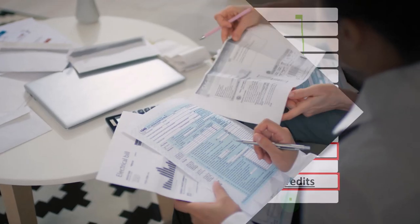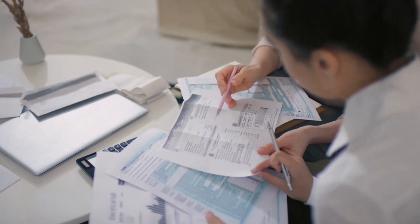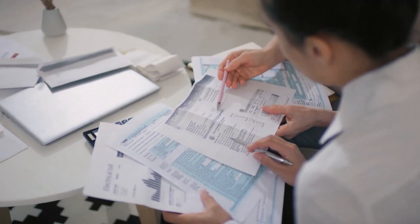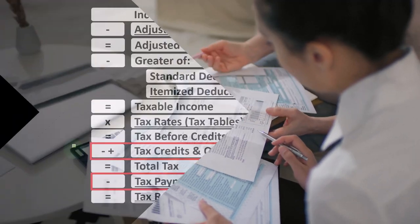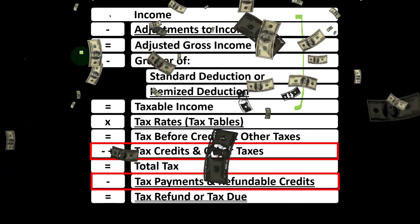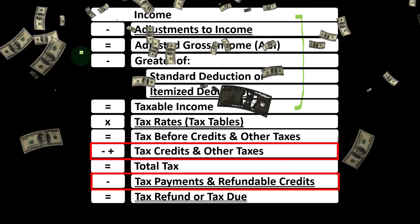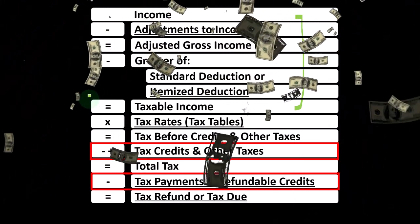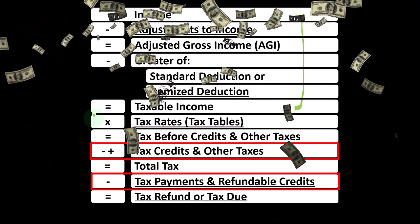Remember that credits are similar to deductions in that we like them both. But if we can get a dollar credit versus a dollar deduction, we would typically rather have the credit because we get the full dollar of benefit, as opposed to the dollar deduction, which simply decreases taxable income by that dollar — so the benefit is dependent on our tax rate.